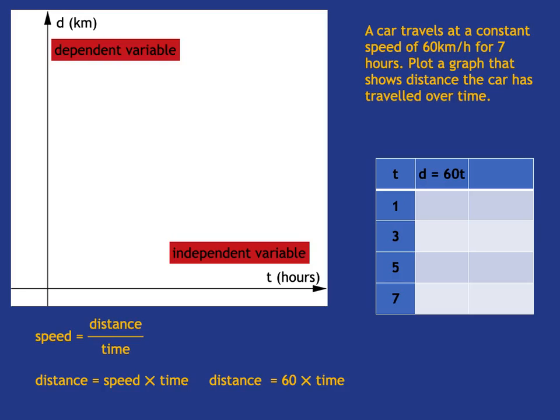My formula is distance is equal to 60 times time. So when time is 1, 60 times 1 is 60. So my point is 1, 60. And I'm not actually going to plot it yet because I haven't got any scale, no numbers on my axes yet. And that's really because I don't know how I need to do it until I've worked out the points.